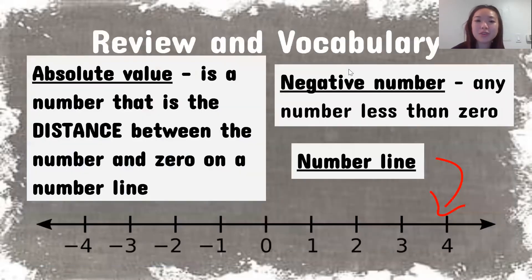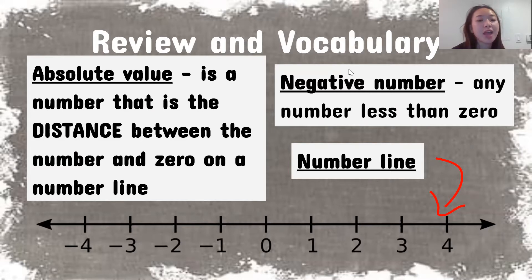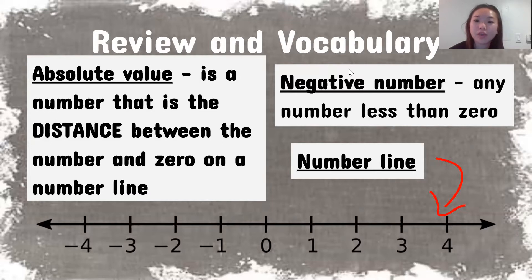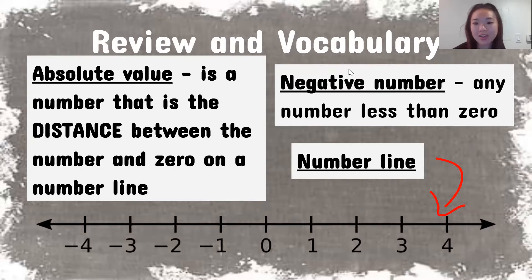For our review vocabulary today we'll be talking about absolute value. The absolute value is the distance between the number and zero on a number line. A negative number is any number that's going to be less than zero. On the number line, negative numbers are anything to the left side and anything to the right side is positive.